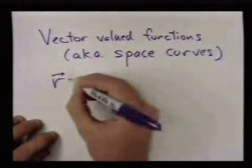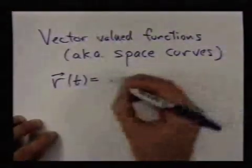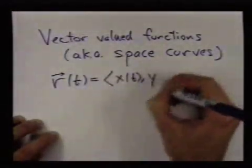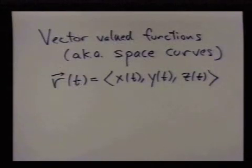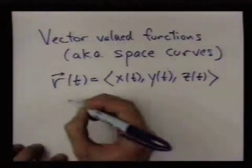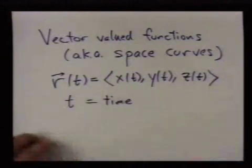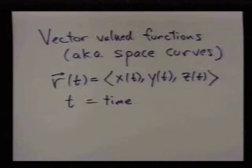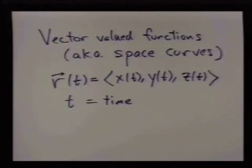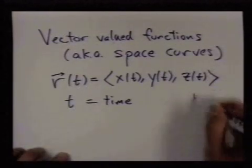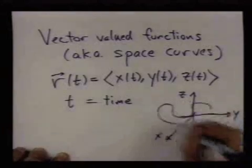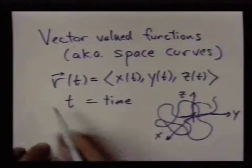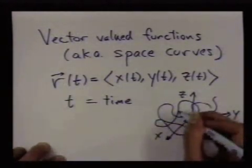A space curve, or a vector valued function, we write this way. We have this function with three components. You think of t as time, and for each time we're specifying a point in space. So you think of this as a fly going through space — at each given time we have a point, and this traces out a curve. I'm using the vector notation, and I'm thinking of everything here as a position vector.